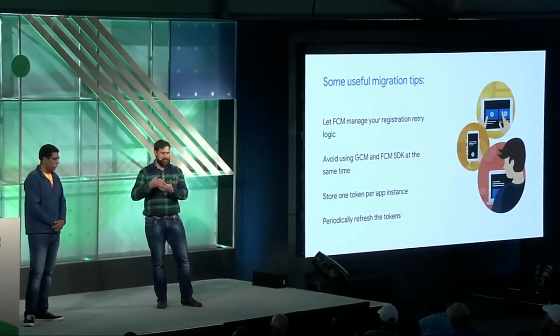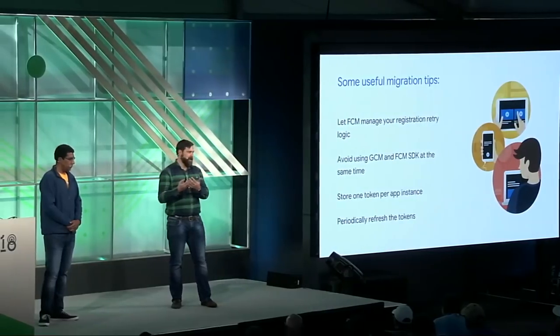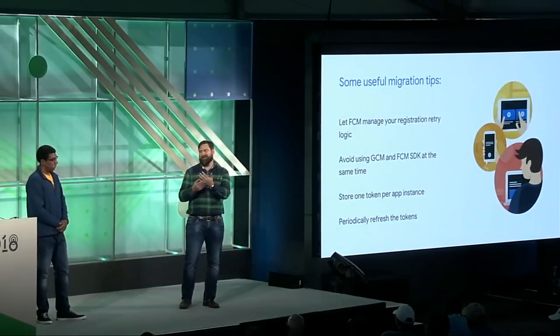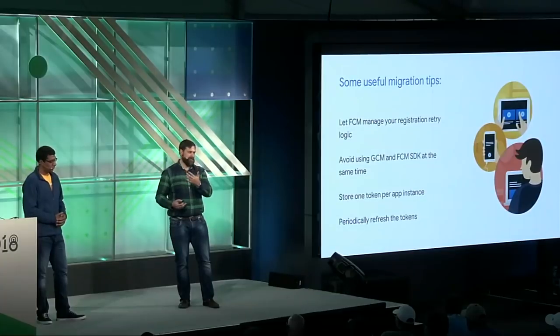Third tip: store one token per app instance. Tokens are mutually interchangeable between GCM and FCM, so you don't need to maintain separate lists. All you need is one list of tokens. When you replace a GCM token for a particular app instance, make sure you replace that token rather than appending it to the list. Those tokens do translate to the same app instance. And finally, make sure you're periodically refreshing your tokens so you always have a valid token at all times.